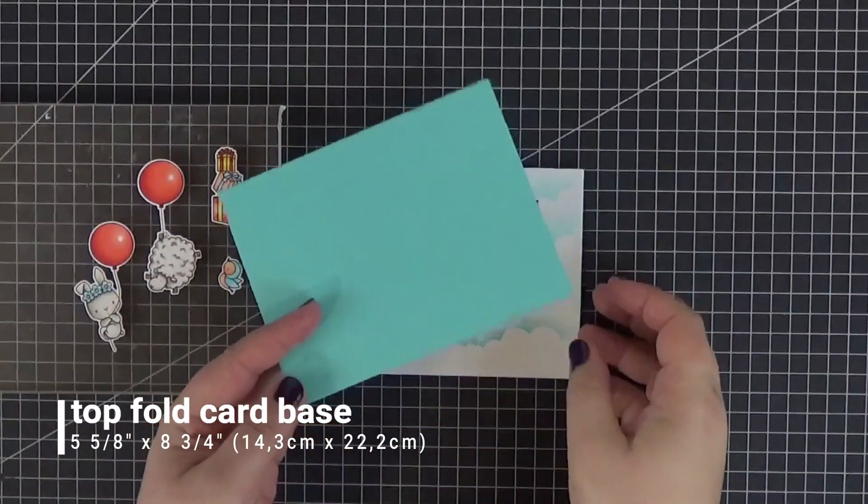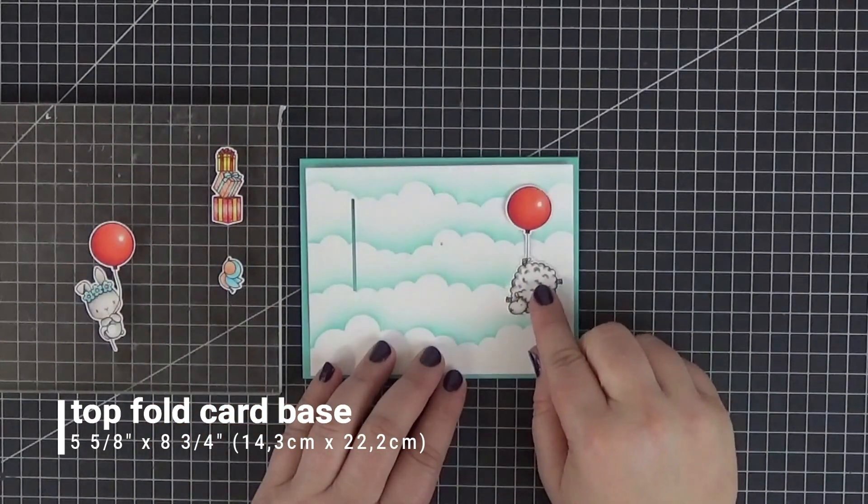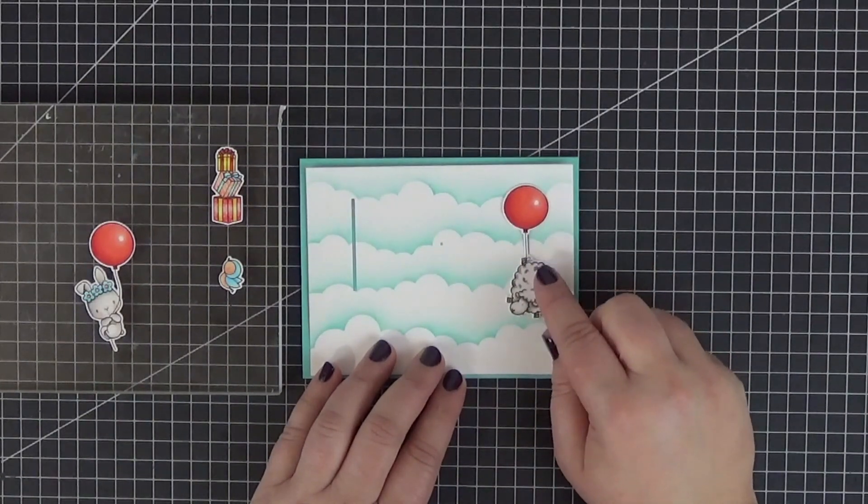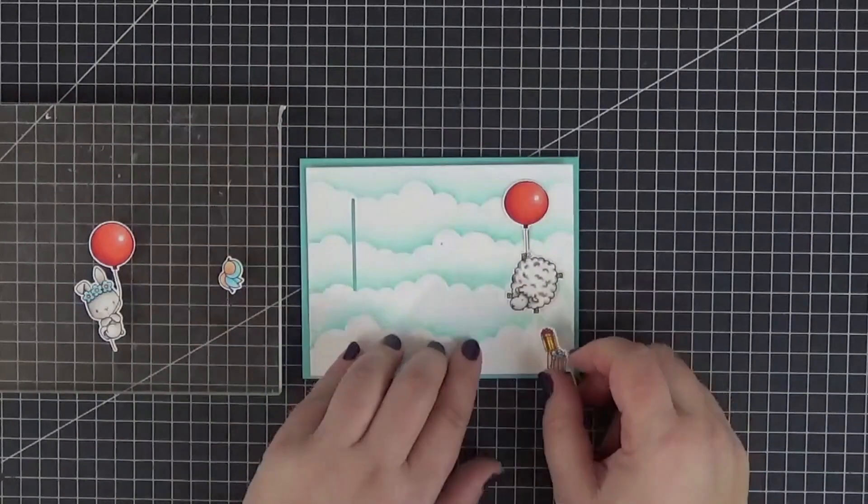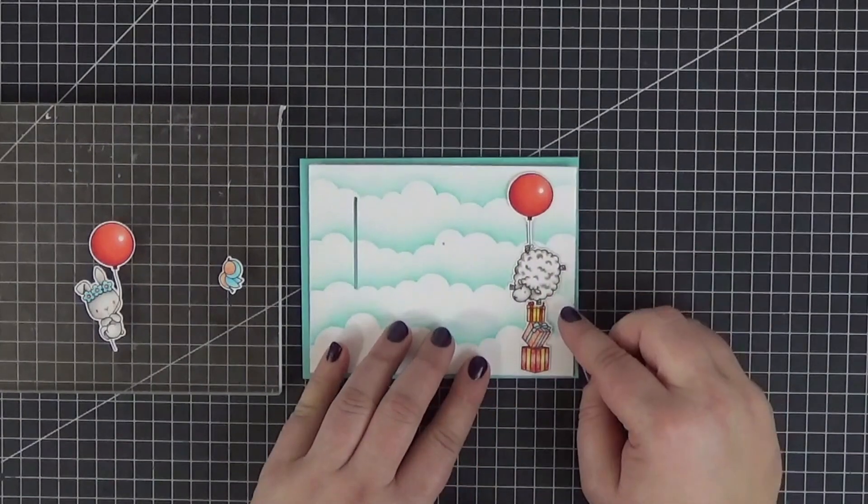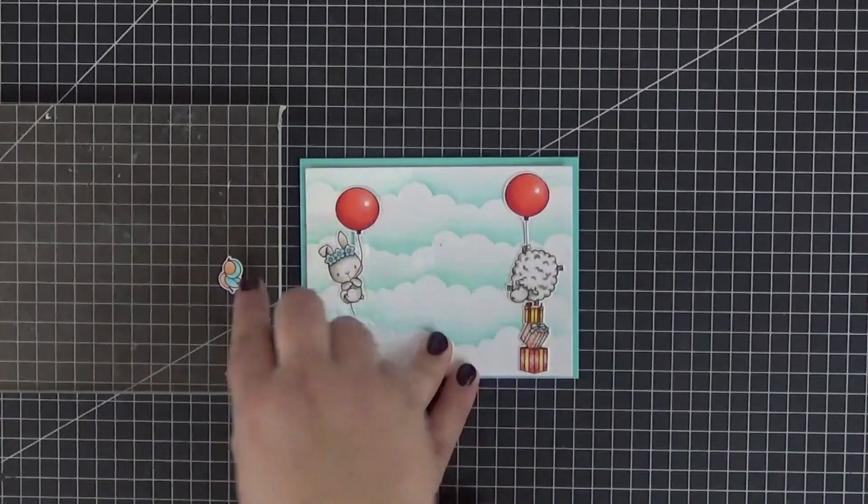To make this tutorial as short as possible I've already stamped, die cut and colored the images. I wanted to use the happy birthday to you sentiment but wasn't sure that it would fit so I'm laying out all of the elements to make sure that it does. By the way the little bird is from the BB Sunflower Sweetheart set.